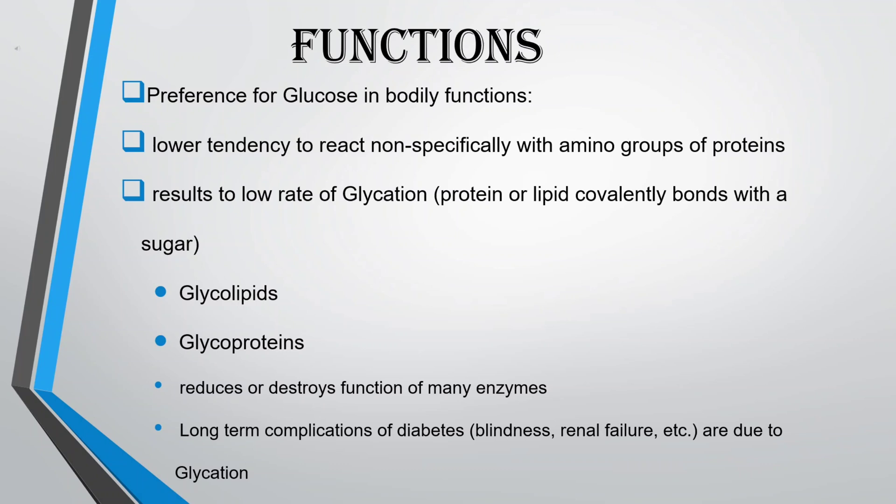Functions of glucose: One preference for glucose in bodily functions is its lower tendency to react non-specifically with amino groups of proteins, resulting in a low rate of glycation. When proteins or lipids covalently bond with a sugar, forming glycolipids and glycoproteins, it reduces or destroys the function of many enzymes.